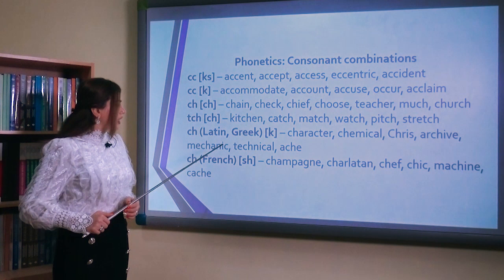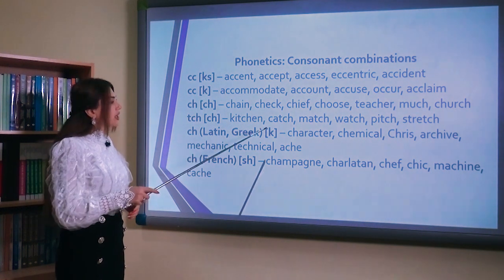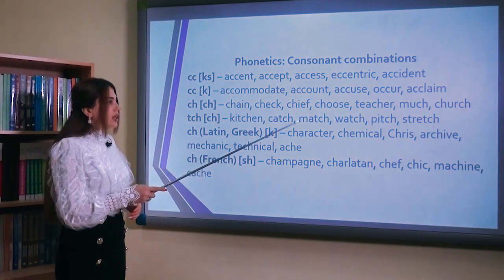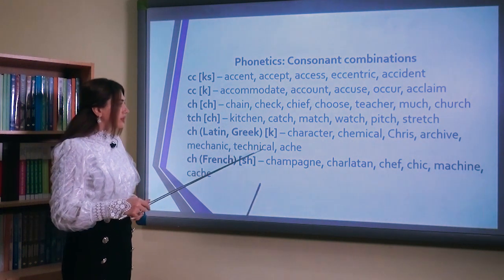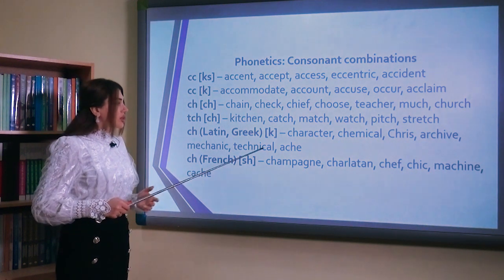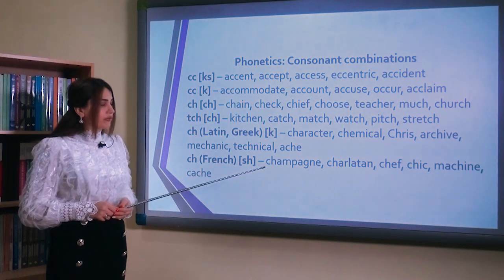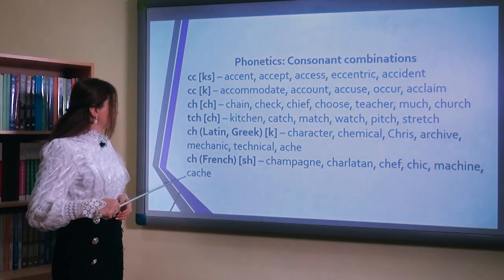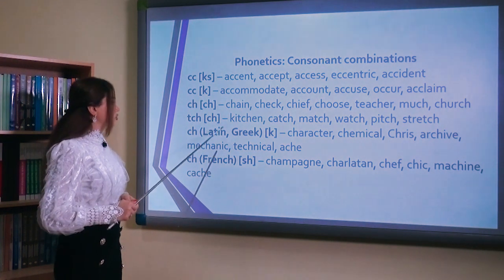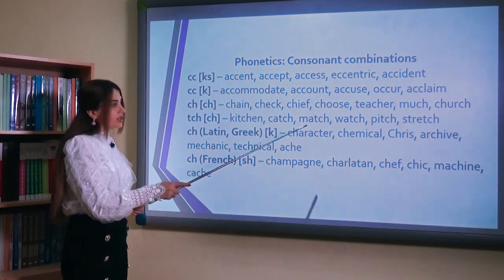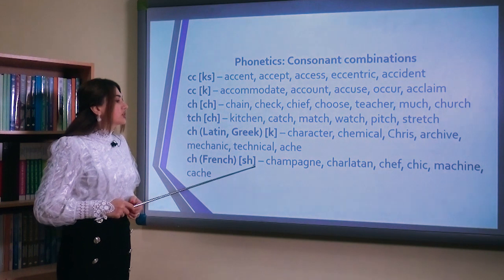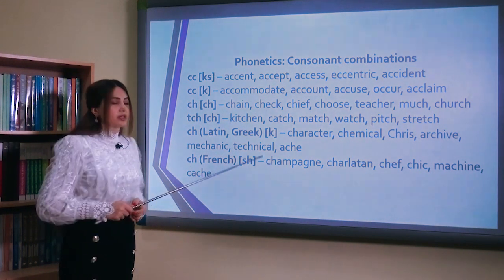The letter combination ch in its Latin origin can be pronounced as /k/: character, chemical, crease, archive, mechanic, technical, ache. But as French origin, it can be pronounced as /ʃ/: champagne, charlatan, chef, chic, machine, cash. Ch hərf birləşməsi iki cür səslənə bilər: yunan və latın mənşəli sözlərdə /k/ səsini (character, chemical), fransız mənşəli sözlərdə isə /ʃ/ (ş) səsini verir (champagne, charlatan).